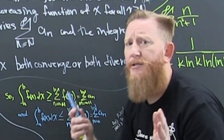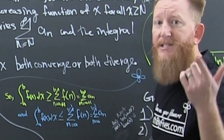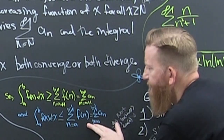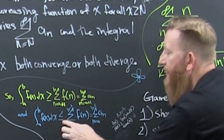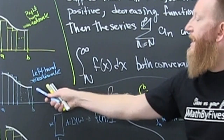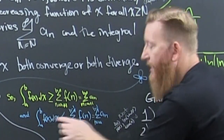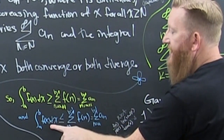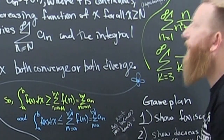If the integral diverges, notice the series is under the overestimate — this ties into comparison tests. Since the area is smaller than the overestimate and the integral doesn't add up to anything, neither will the series. That's what it means when we say they both converge or both diverge: if one doesn't add up, neither does the other.